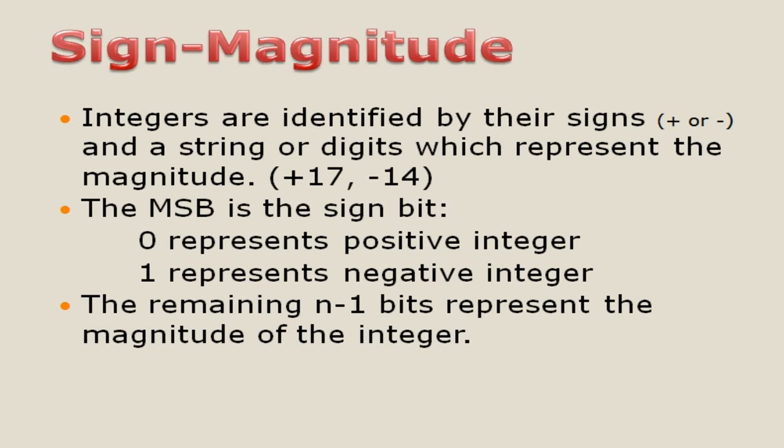The MSB is the sign bit. Zero represents a positive number — that means if a binary number starts with 0, the MSB is 0, and you call it a positive number. The computer identifies whether the number is positive or negative only through this MSB sign bit. So if the number starts with 0, the computer knows it is a positive number; if the number starts with 1, the number is represented as a negative number. The remaining n minus 1 bits represent the magnitude of the integer.